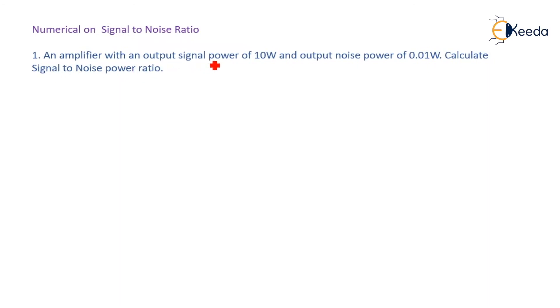An amplifier with an output signal power of 10 Watt and output noise power of 0.01 Watt, calculate signal to noise power ratio.